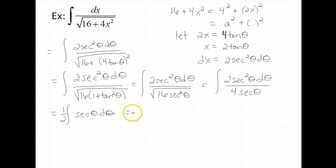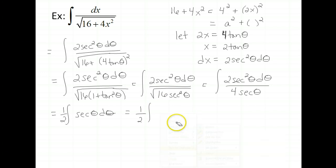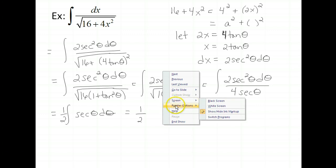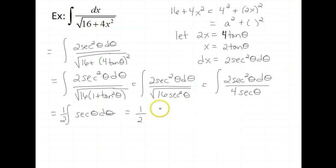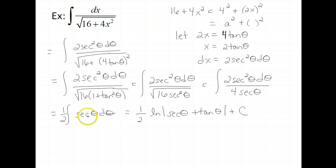Our work in section 7.2 gives us a formula for the integral of secant theta. Using that formula, we can write the antiderivative: it's 1/2 times ln|secant theta plus tan theta| plus a constant of integration, since we're dealing with an indefinite integral.